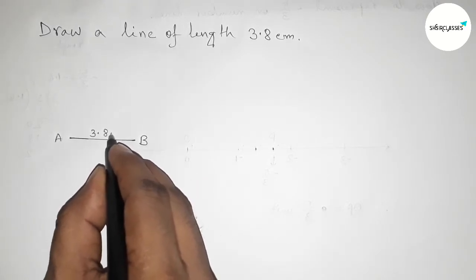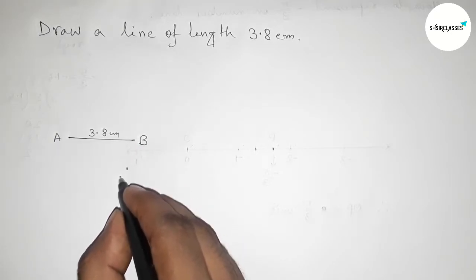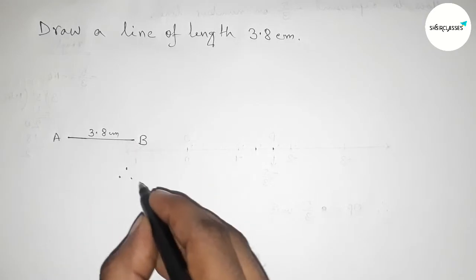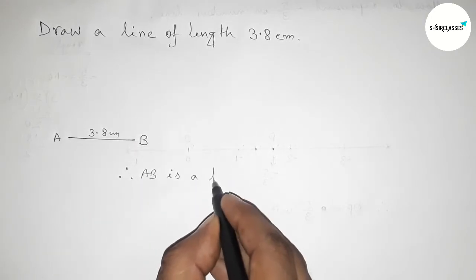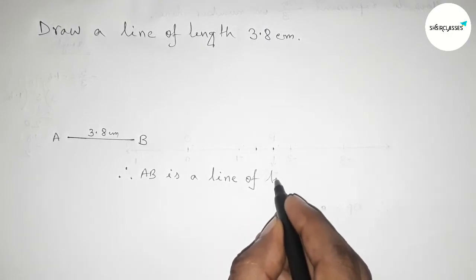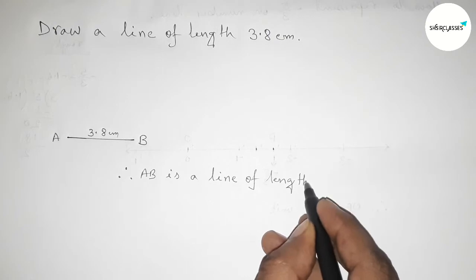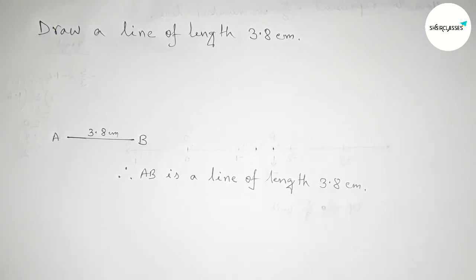AB is a line of length 3.8 centimeter, and by this way you can draw a line of length 3.8 centimeter. So that's all, thanks for watching. If this video is helpful to you then please share it.